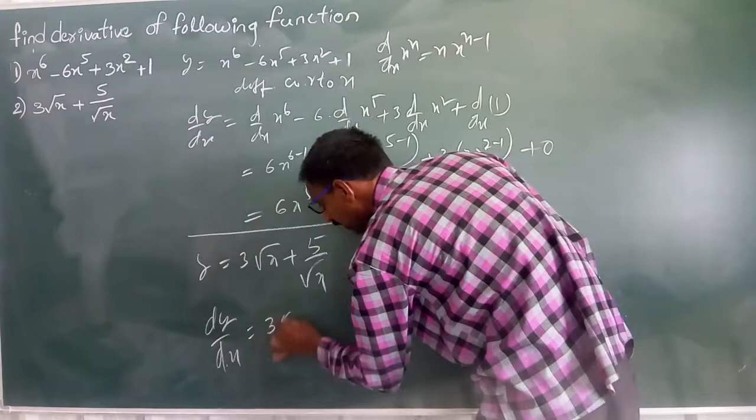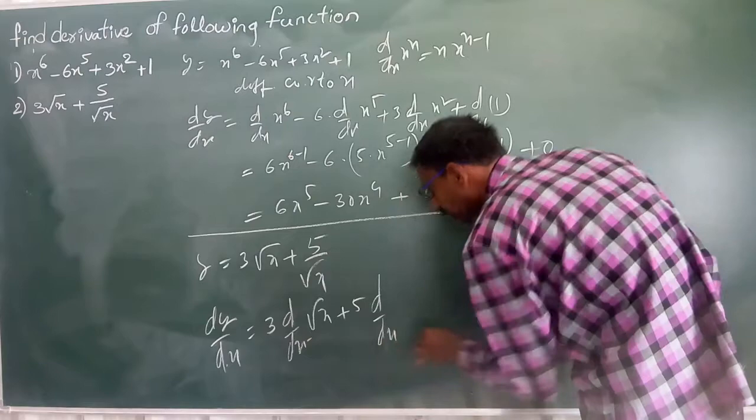So dy by dx is equal to 3 into d by dx of root x. Plus 5 into d by dx of 1 by root x.